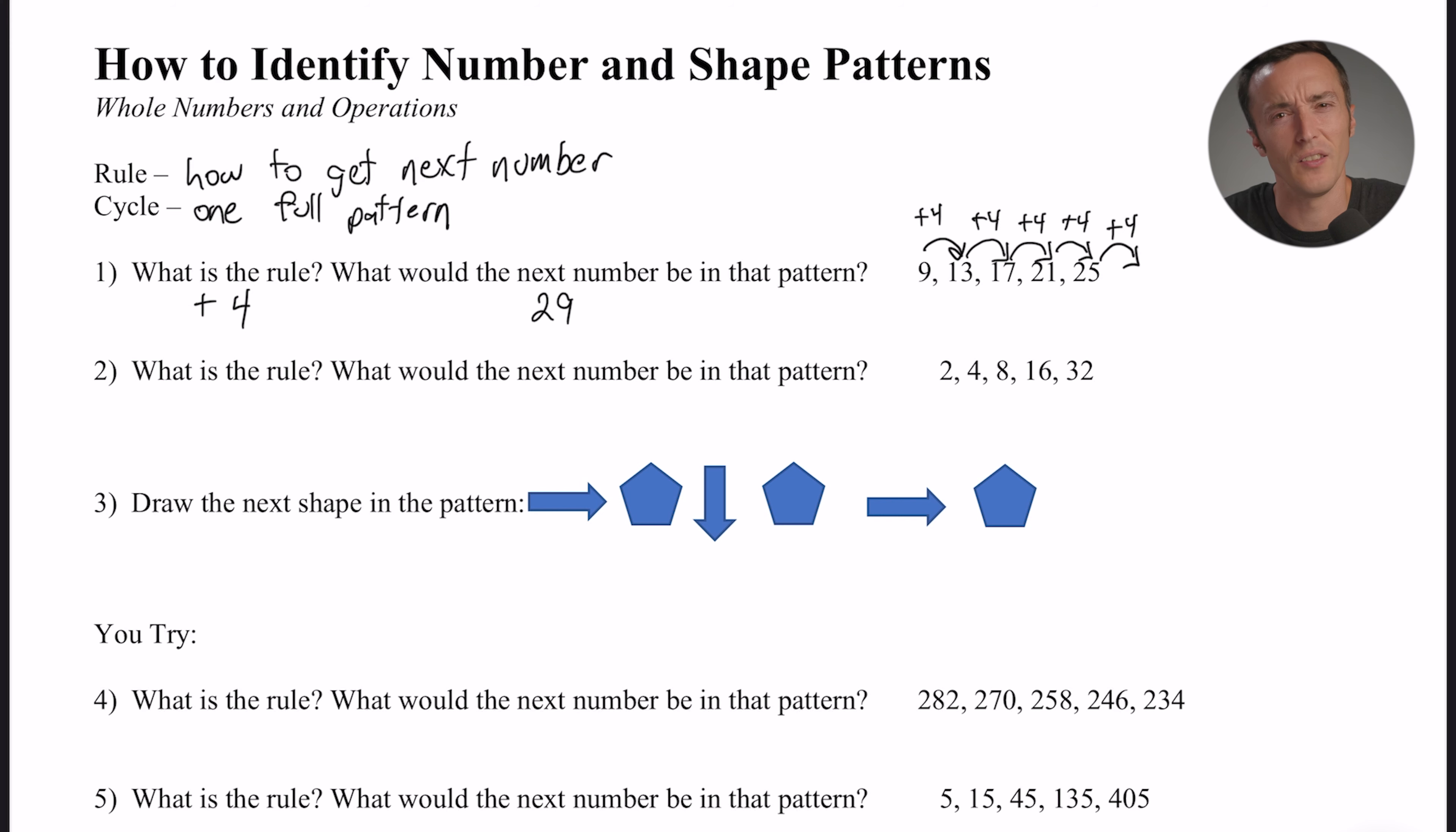Subtraction doesn't really make any sense here because the numbers are getting bigger. What about multiplication? Is there anything I could multiply 2 by to get 4? Yeah, I could do 2 times 2, right? So let me see if that works. So multiply by 2. Well then, what if I multiplied by 2? 4 times 2, okay, that would give me 8. What about 8 times 2? That would give me 16. What about 16 times 2? Would give me 32.